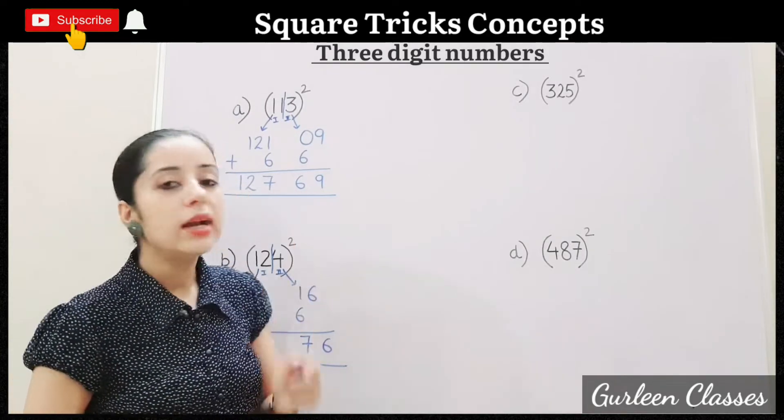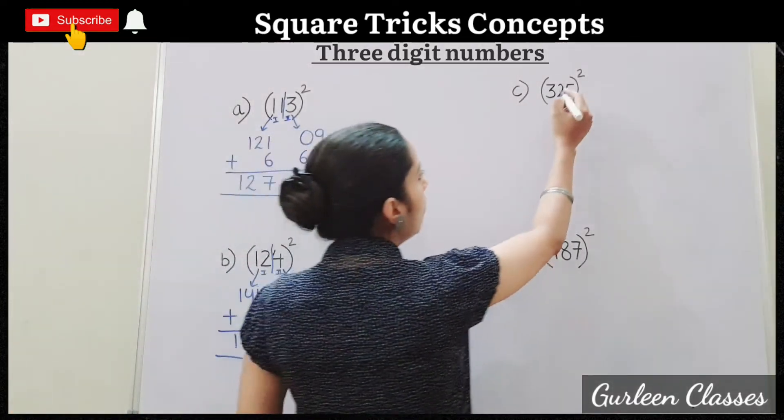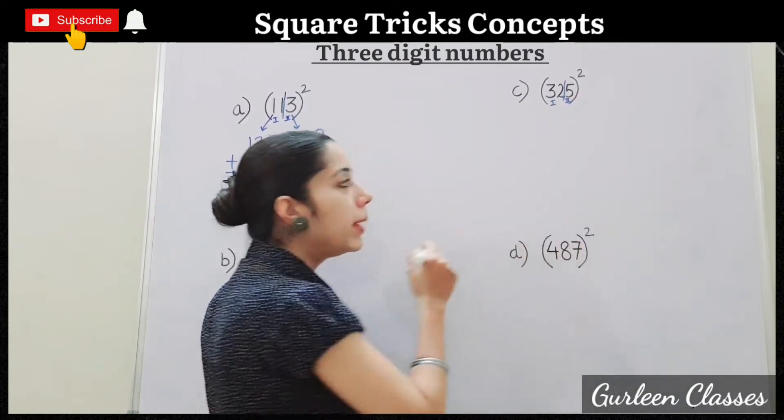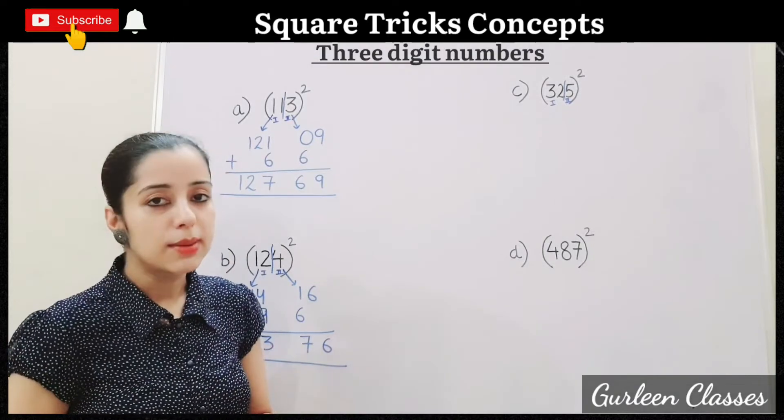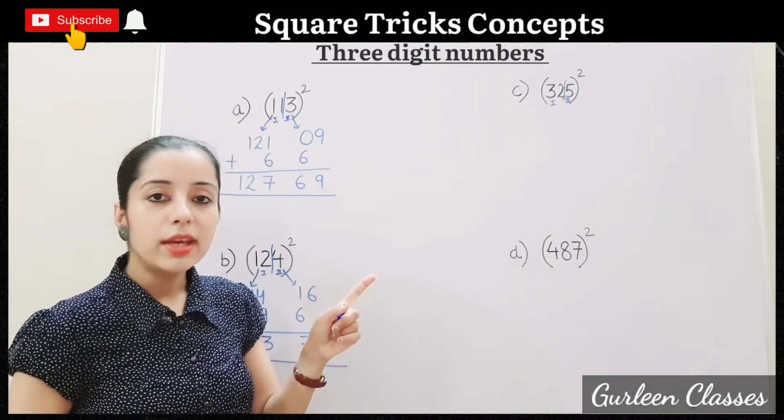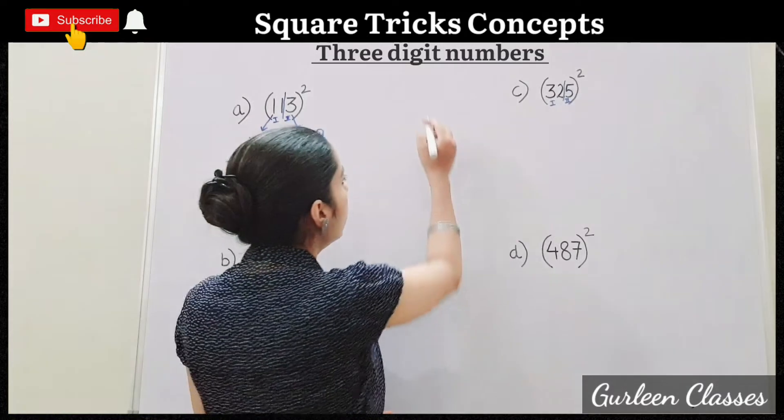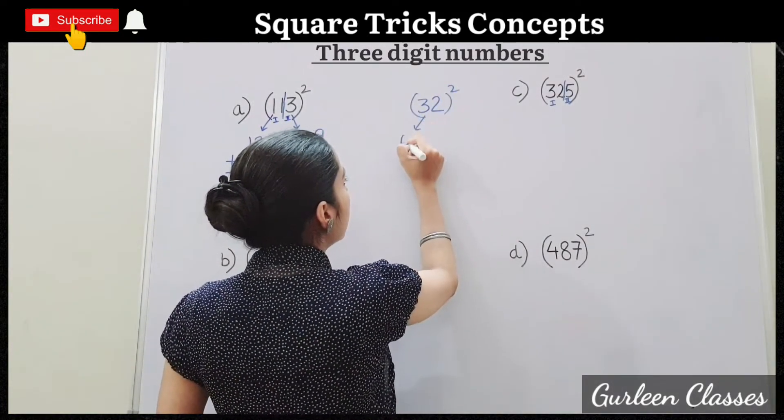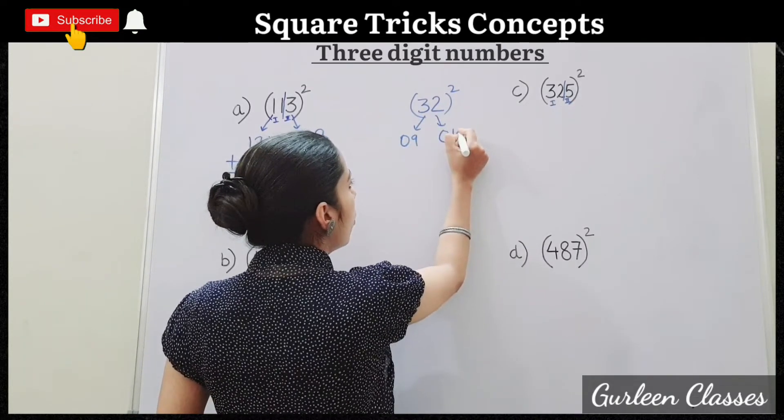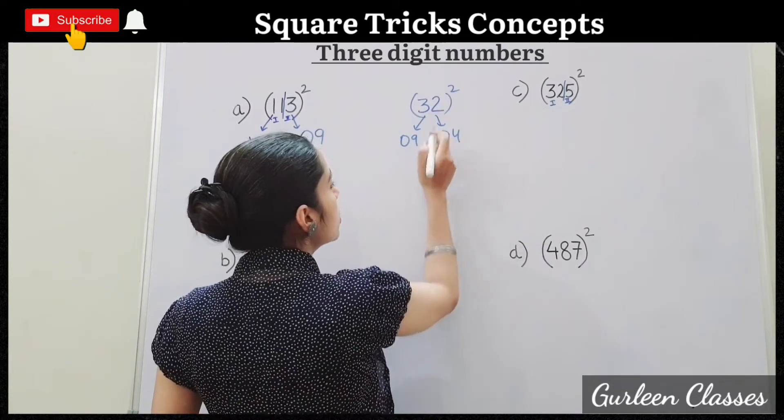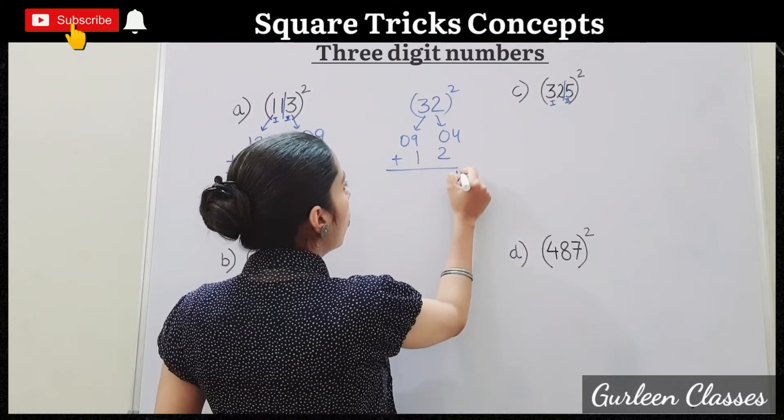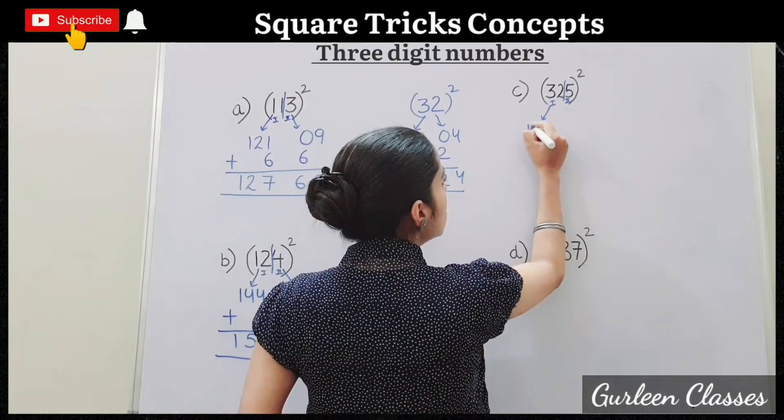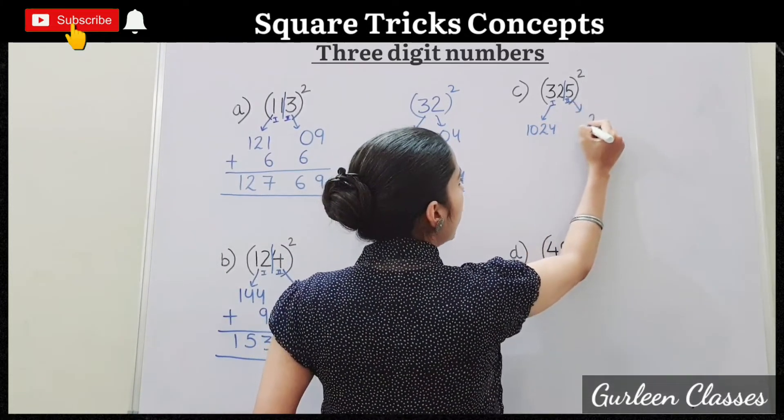C. 325 square. So 32 will be our first number and 5 will be our second number. Bigger number we are taking as first number. So 32 square, for that we can use that trick which I explained to you. 32 square we have to find out. 3 square, 9. 2 square, 2 twos are 4. 3 twos are 6. 6 twos are 12. Add 2. So 4, 2, 10, 1, 0, 2, 4. 32 square is 1,024. And 5 square, 25.